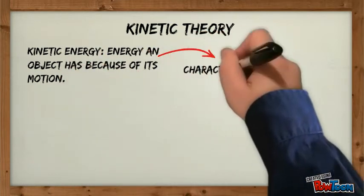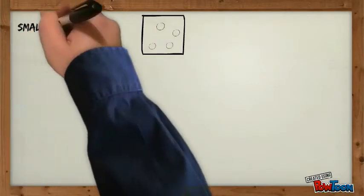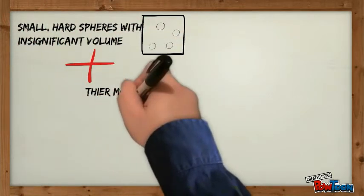Now we can know what the characteristics of gas particles are. The first characteristic is that their particles are small, hard spheres with insignificant volume.